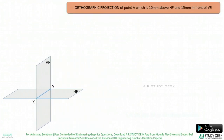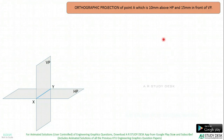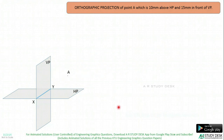Let us see an example: orthographic projection of a point A which is 10 mm above HP and 15 mm in front of VP. 10 mm above HP means the point can be in the 1st or 2nd quadrant. Since the point is 15 mm in front of VP, it is in the 1st quadrant — above HP and in front of VP.